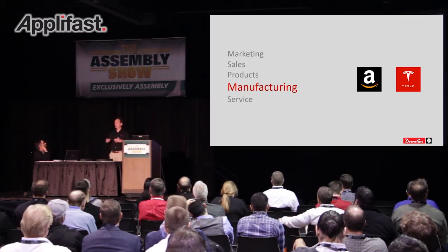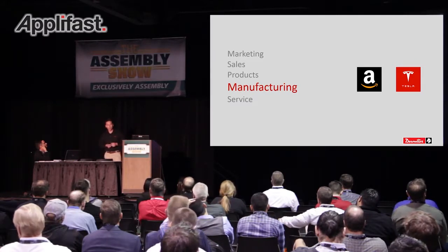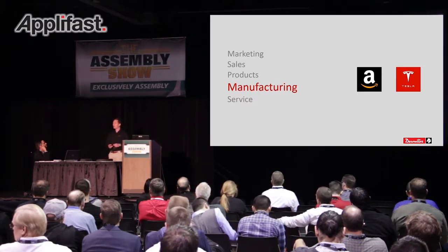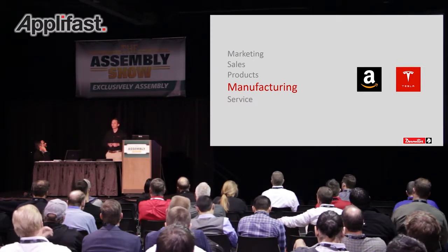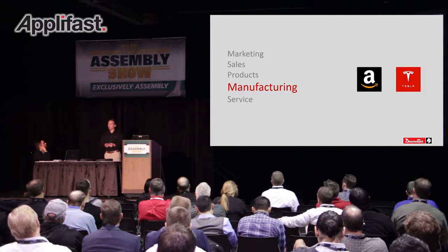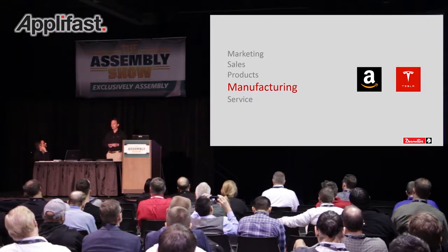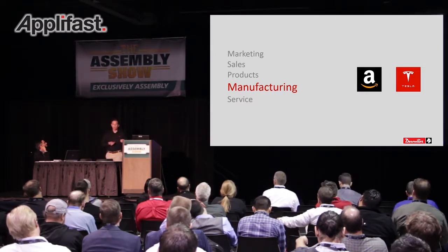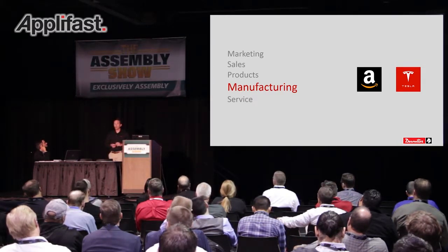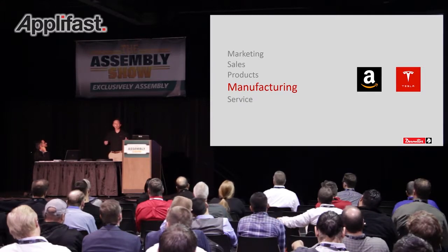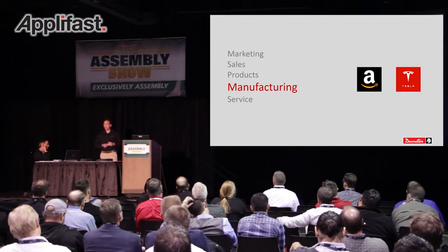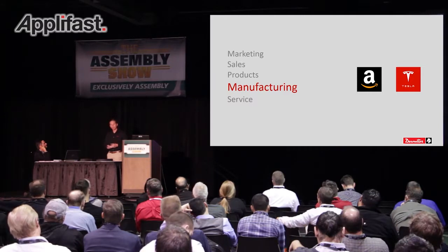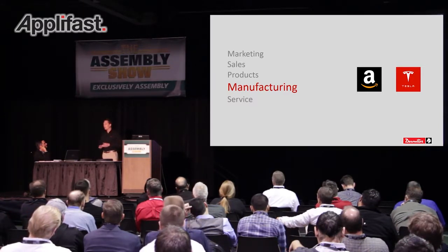Amazon also uses big data on a macro scale. Instead of just creating a unique marketing plan for you, they take all the other people who were looking at TVs and see what they ultimately purchased. So Amazon can start advertising complementary goods to you that related shoppers purchased. We can analyze trends on a very micro level, but it can also be applied at the macro level. With Amazon, they use big data hoping to see that immediate payback — within a month, within a week — using it for marketing and sales.